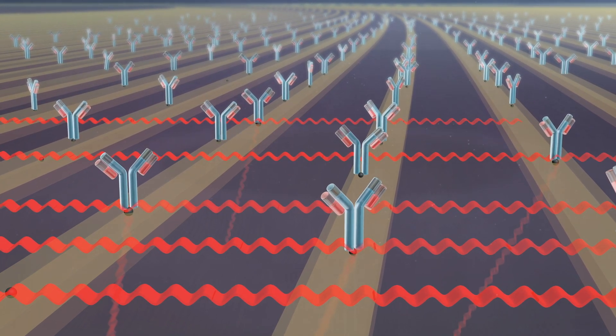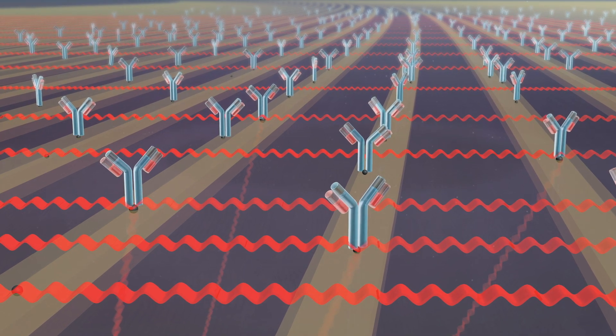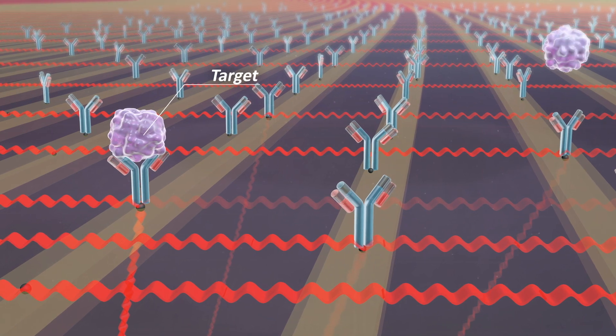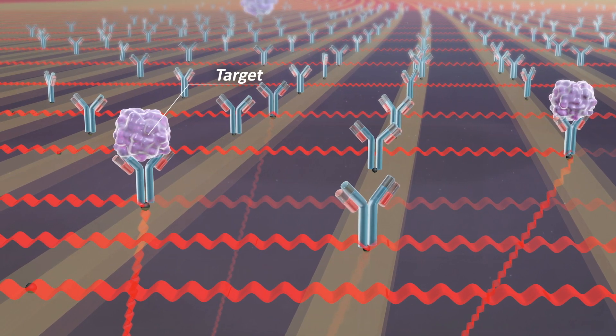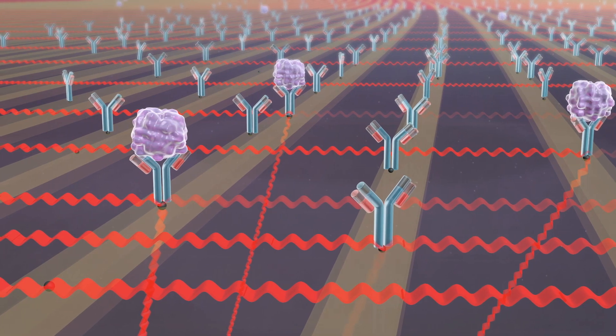When a light wave hits one of these antibodies, part of the light is diffracted at a certain angle, while the angle is defined by the spacing of the antibody lines. When a sample is applied to the sensor, the potential target is detected by the binder, which increases the intensity of the diffracted light.